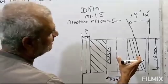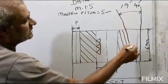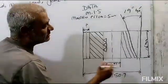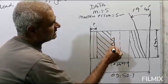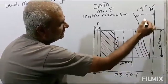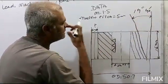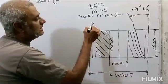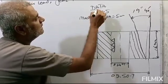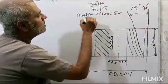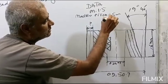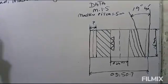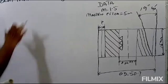I have a sketch. This is a helical gear. The bore is 24×7. The angle of the teeth is 19 degrees 40 minutes. The outside diameter (OD) is 50.7 mm. We have no height given. The module data is 1.5. The milling machine pitch is 5 mm. We have two or three things we need to find, including machine lead.